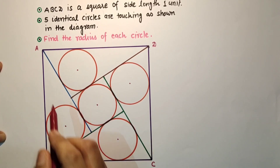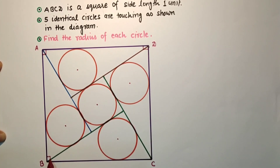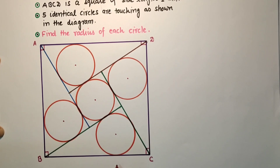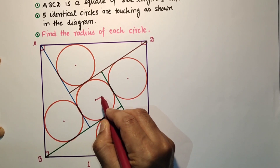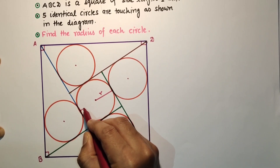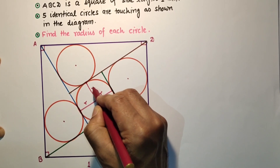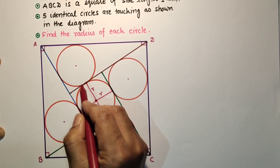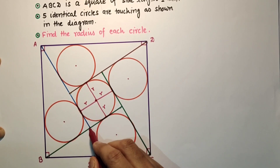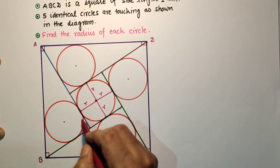As we can see, each angle is 90 degrees and each side is 1 unit. Let us suppose the radius is R. From the center to the edge is R, and the same applies at each side. So the diameter is 2R — from here to here it is 2R, and from here to here it is also 2R.